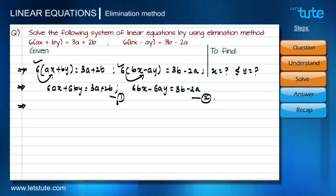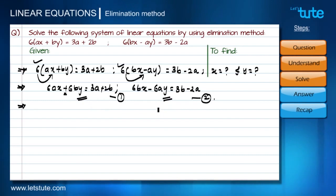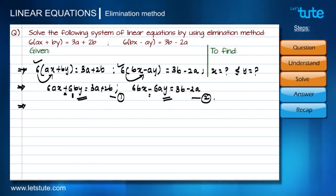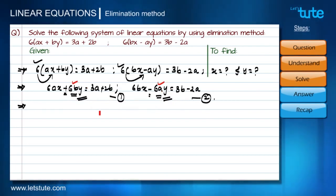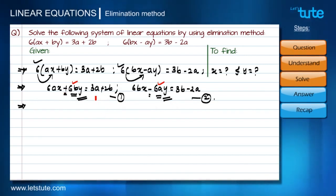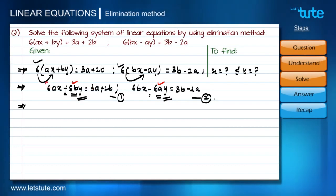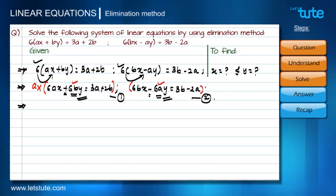Let's label these as equations one and two. Before solving using the elimination method, I need to decide which term to eliminate. I have decided to eliminate the y term. Since the y terms have opposite signs, I will add the equations — but first I need to make the coefficients of y equal. I have six·b and six·a, so I need to multiply by constants to equalize them.